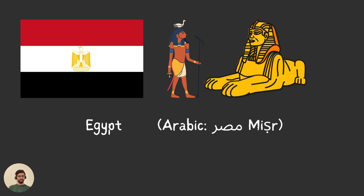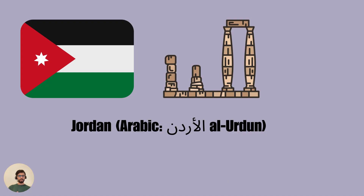The first country is Egypt. In Arabic we say: Masor. Can you repeat after me? Masor. Next we have Jordan, and in Arabic we say: Al Ordon. Can you repeat? Al Ordon.